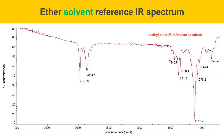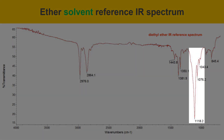Here's an ether solvent reference IR spectrum. Compare the IR spectrum of your unknown solvent to this reference and look for similar peaks. Pay particular attention to the fingerprint region, which is very useful for identifying compounds. There's a very strong peak at 1118 wavenumbers that will match ether but not any of the others — this is from the C-O bonds in ether, which are different from the C-O bonds in tetrahydrofuran.